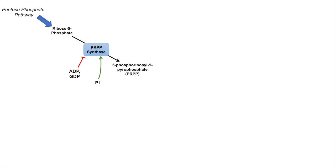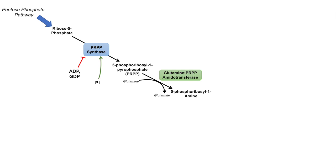This is where it gets a little bit different. As we learned in pyrimidine synthesis, PRPP actually gets utilized directly, but with purine synthesis it needs to be processed further. One of the most important enzymes in the purine synthesis pathway is glutamine PRPP amidotransferase. What it does is it utilizes glutamine to add an amine group to the PRPP to result in 5-phosphoribosyl-1-amine. In the process, it converts glutamine to glutamate. This enzyme is the first committed step in purine synthesis.